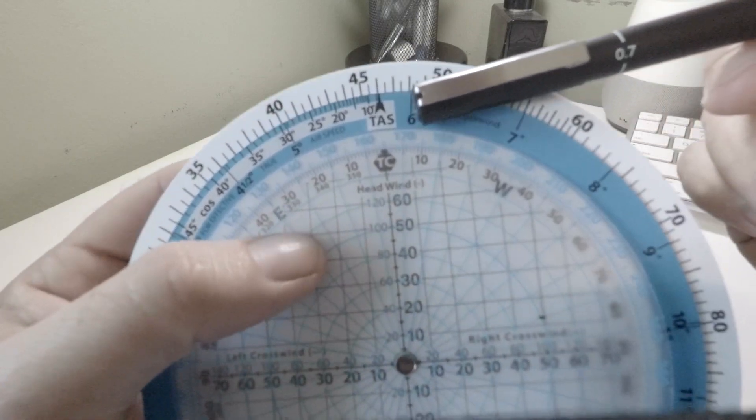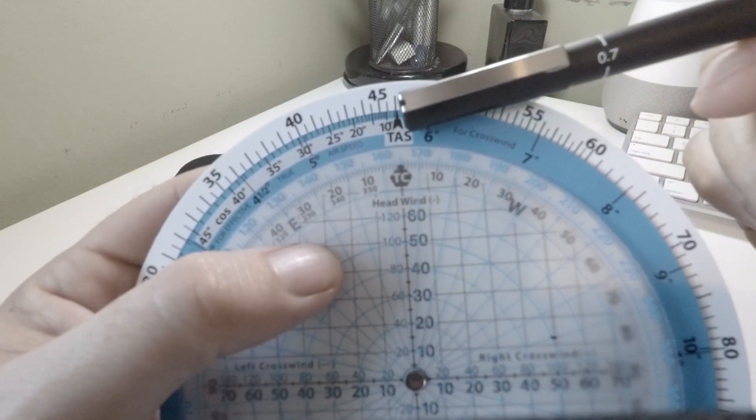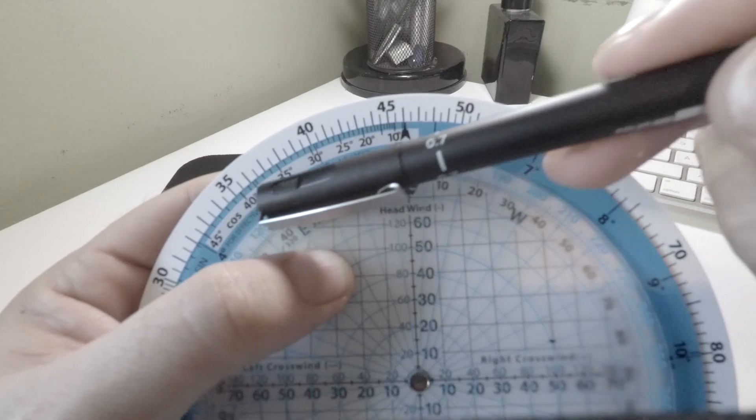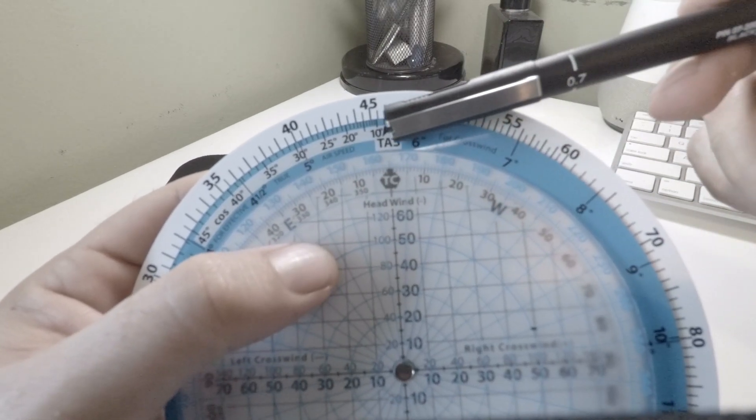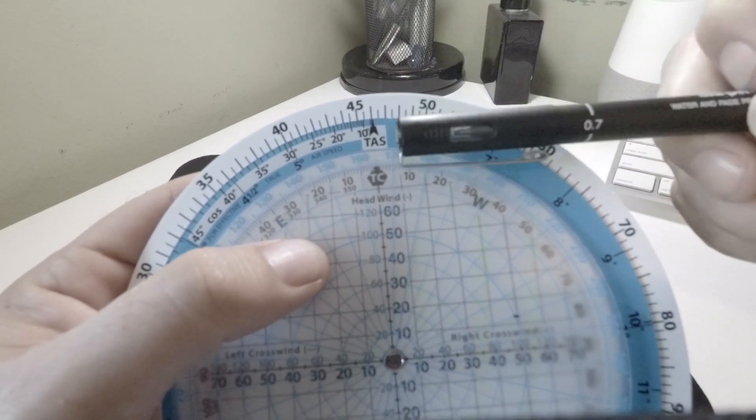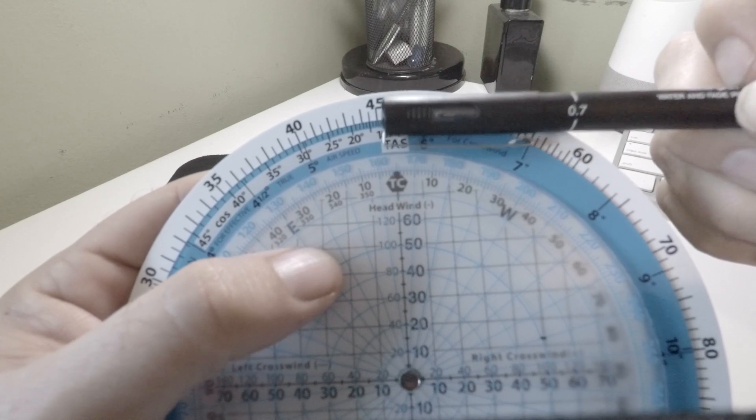In our TAS section on the cosine bit, we now go to the left 12 degrees. So we can see there it says 10. If we look at 12, we're at about 450 knots ETAS.